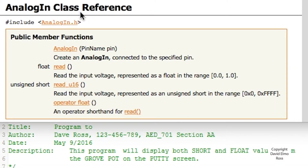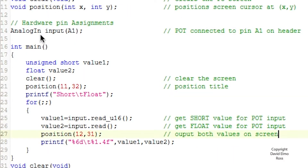Let's take a look at our AnalogIn class. As with DigitalOut, we have AnalogIn, a pin name, and the actual pin we're going to associate with that analog input. We have a member function called read, which is a float returning a value from 0.0 to 1.0 for minimum to maximum of our A-to-D input. We also have read_u16, an unsigned 16-bit short, returning a value from 0 to 0xFFFF, or decimal 0 to 65,535. Our program says AnalogIn input A1 — using input as our pin name, with pin A1 on our header as our pot, our A-to-D input.